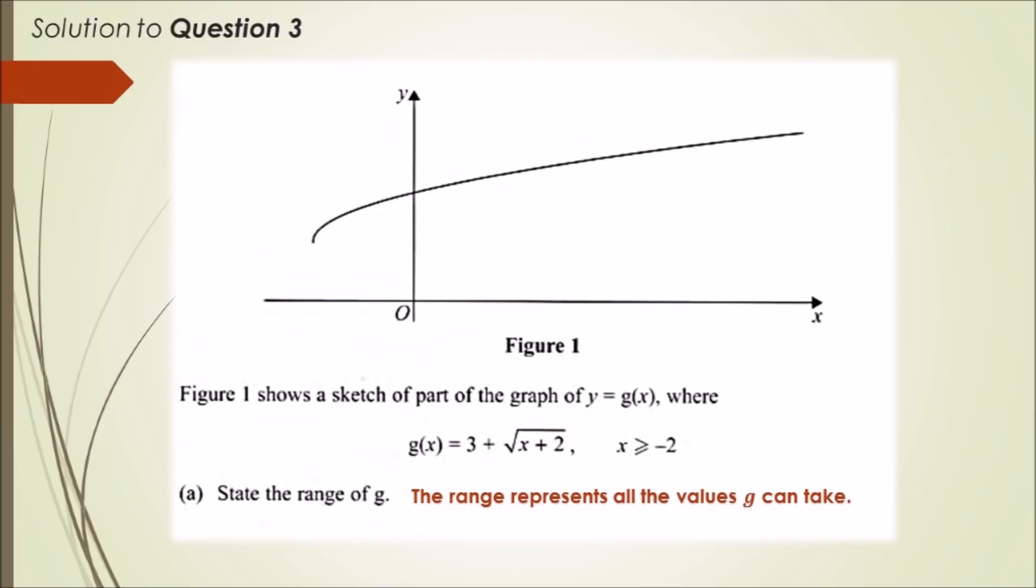Since our given domain is x greater than or equal to minus 2, we can observe that the minimum range, just by looking graphically, is at the least negative point—that's at x equals minus 2. Here's a little dotted line showing the minimum range. If we plug in x equals minus 2, then g gives us 3. We know clearly that the minimum range for g is 3, so g takes values anything greater than or equal to 3.